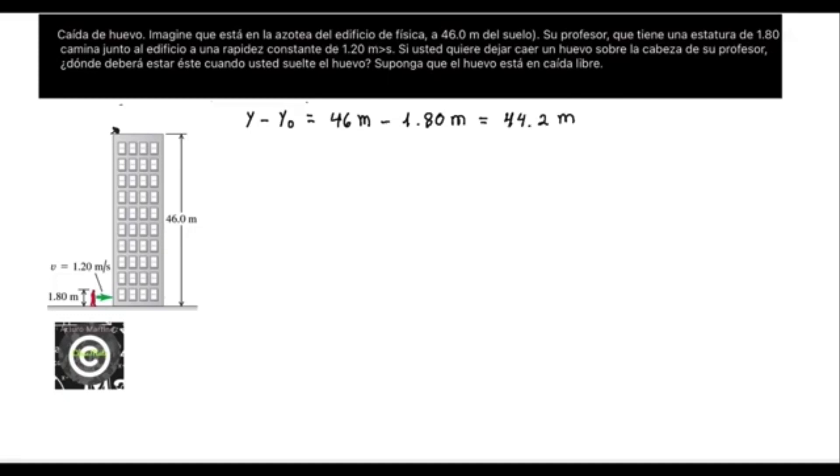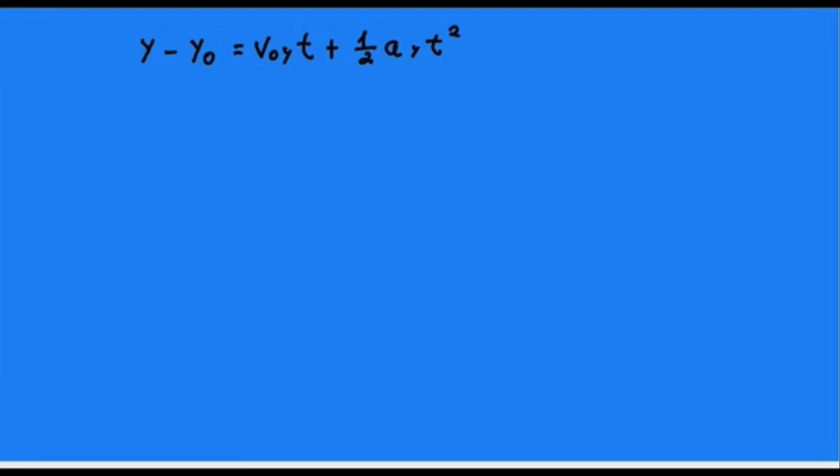The egg must fall 44.2 meters, dropping it from the roof in freefall. The time it takes for the egg to fall is the time it takes for the teacher to arrive at the door. When we drop something in freefall, we notice that its initial speed is going to be zero, so this term is going to be nullified.